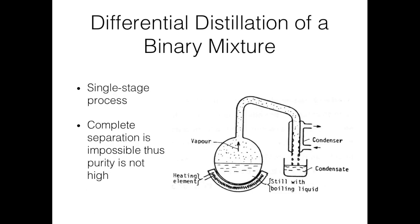This is the diagram of the differential distillation of a binary mixture. It is a single-stage process, and because it is single stage, complete separation of the two components is impossible. The mixture is heated using a heating element, some of the mixture vaporizes and travels into a condenser, where the vapor is cooled to become liquid — called the condensate. The temperature is set at the boiling point of one component so that it vaporizes, separating it from the higher boiling point component.